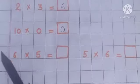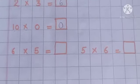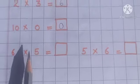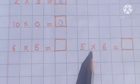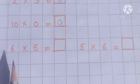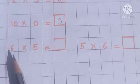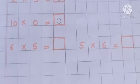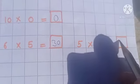Look at this example. Here we have six times five, and here we need to find five times six. These questions are the same. Six times five is 30, and five times six is also 30.